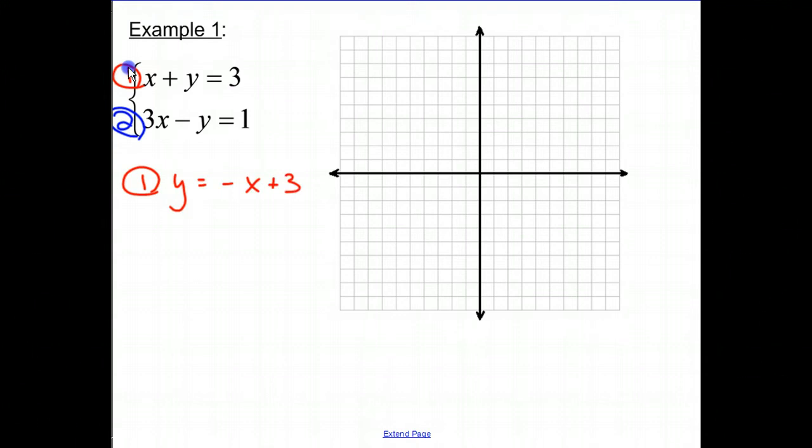Equation 2, if I want to get the y alone, I'm going to subtract 3x from both sides, leaving a negative y equals negative 3x plus 1. And to get that y completely alone, I'll divide by negative 1. So y equals 3x minus 1.